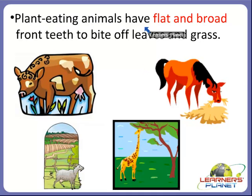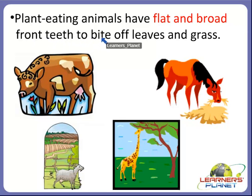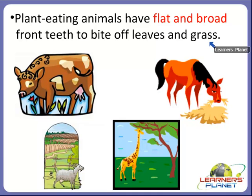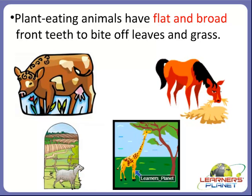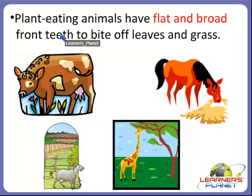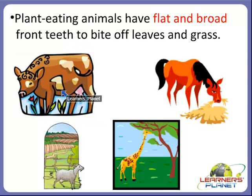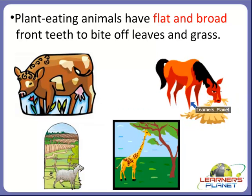Plant eating animals have flat and broad front teeth to bite off leaves and grass. For example, plant eating animals like cow, horse, goat and giraffe have flat and broad front teeth, and their strong back teeth help them to chew the food well.